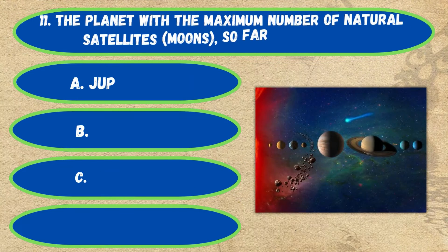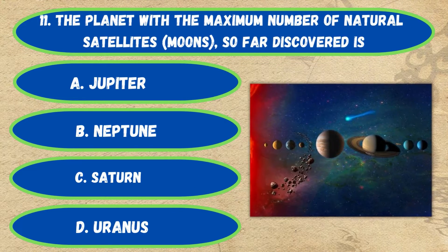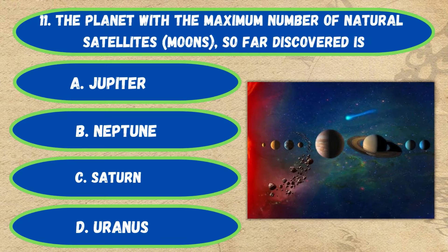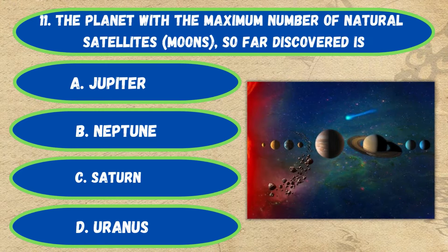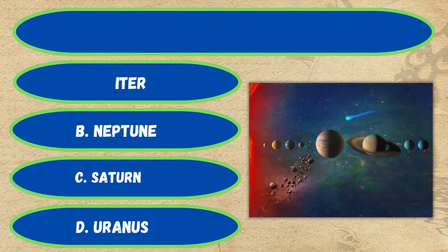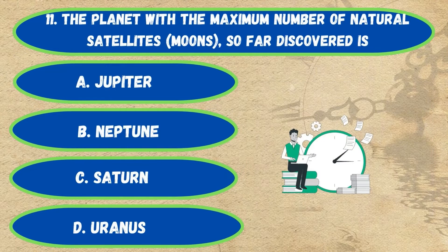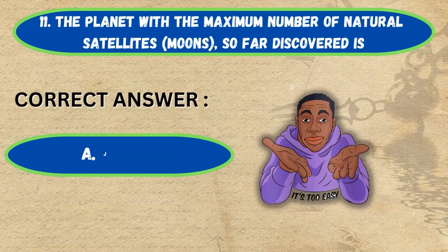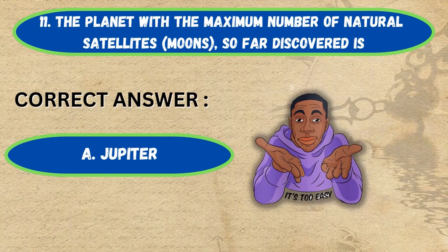Question number 11. The planet with the maximum number of natural satellites so far discovered is: option A, Jupiter; B, Neptune; C, Saturn; D, Uranus. The correct answer is option A, Jupiter.